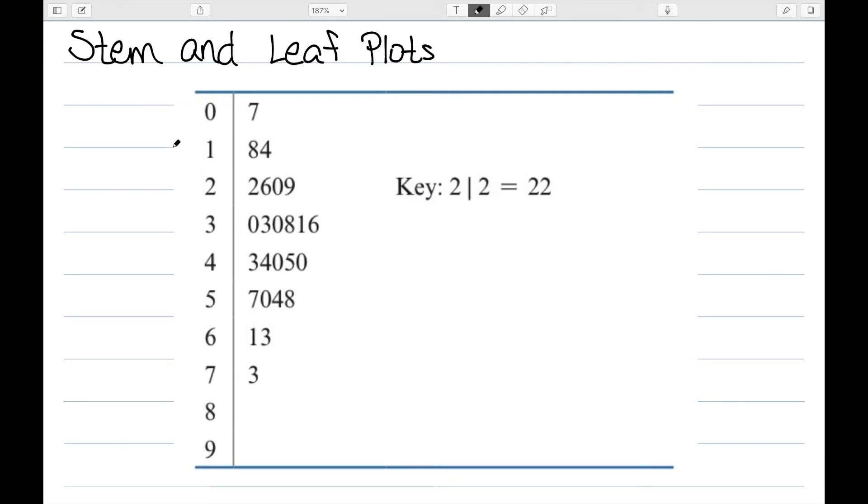Here's an example of a stem and leaf plot. The first column here is the stems. This is the first digit of my numbers. The second is the leaves. So the idea here is I have the number 7, I have 18 and 14, 22, 26, 20, 29, 30, 33, 30, 38, 31, 36, etc.